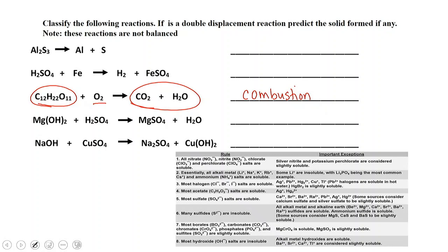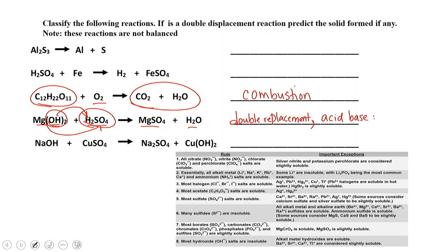Magnesium hydroxide plus sulfuric acid gives us magnesium sulfate and water. We have two partners that swap out, so we have a double replacement — but this is a special double replacement. We've got something with an OH group and an acid with hydrogen plus a negative polyatomic ion. We end up with a salt and water, so this is also an acid-base reaction. Is it a precipitation reaction? No — sulfates are soluble, including magnesium sulfate, so we do not have a precipitation reaction.